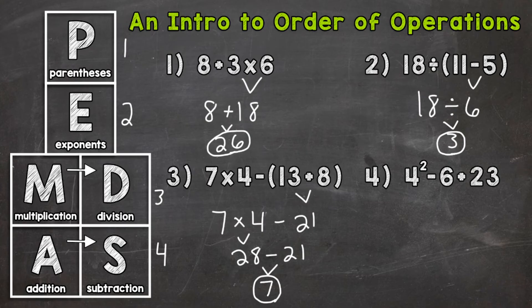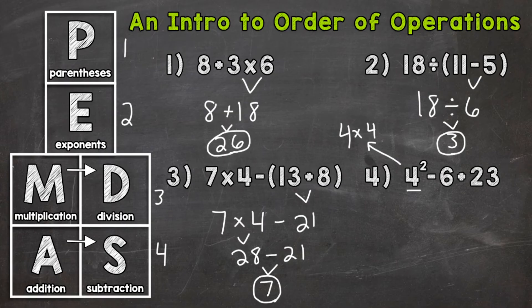Lastly, number four: we have four squared — or four to the power of two — minus six plus 23. Any parentheses? No. Any exponents? Yes — four to the power of two, or four squared. If you're not familiar with exponents, this means four times four; we took four and expanded it out twice. It does not mean four times two — it means four times four, which gives us 16. Bring down the subtraction, the six, the addition, and the 23.